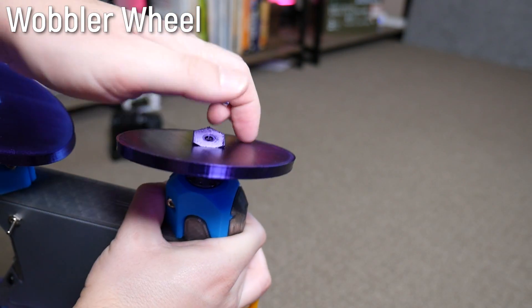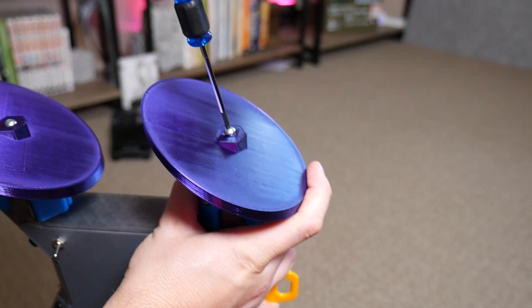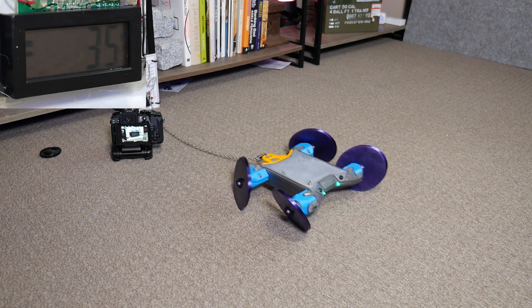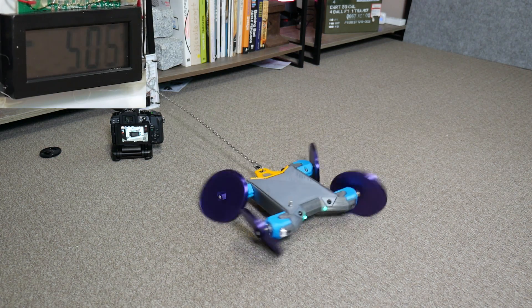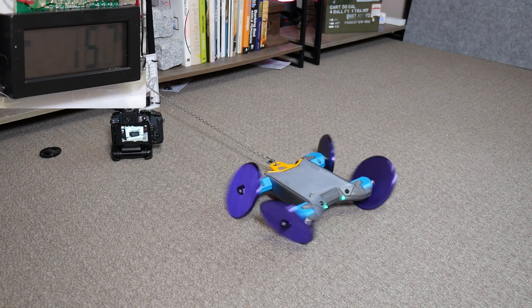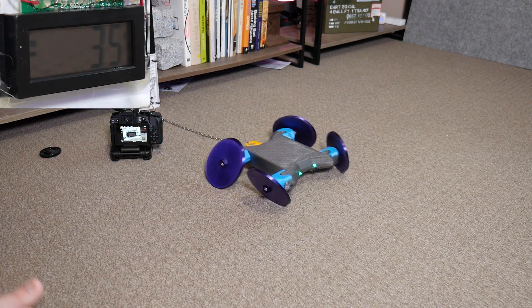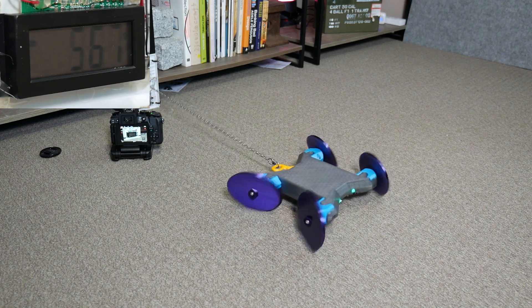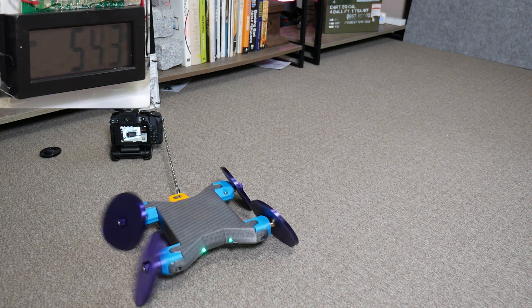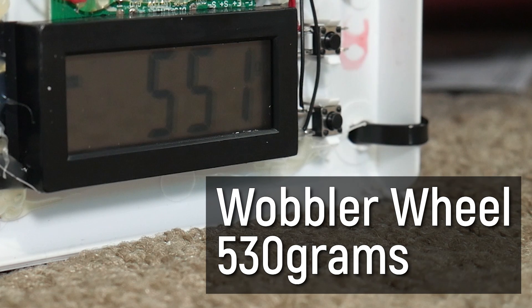Next up the wobbler wheels. I'm really excited to see if these have more traction due to their shape even though they have the same surface area contacting the ground. In practice however they seem to wander quite a bit when pulling. They're not really that controllable and I was always veering to the right. I even tried inverting the platform and got the same result. Despite this it is clear to see that they do pull quite a bit more than the straight up circles even though the number jumped around quite a lot. I called these at about 530 grams.